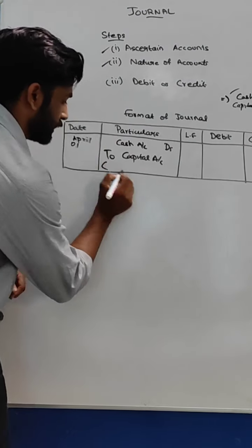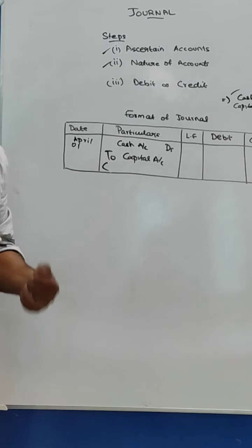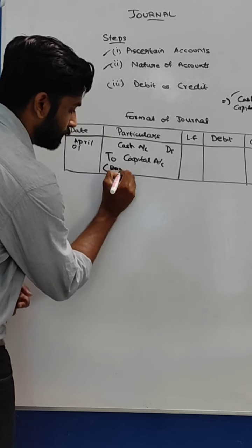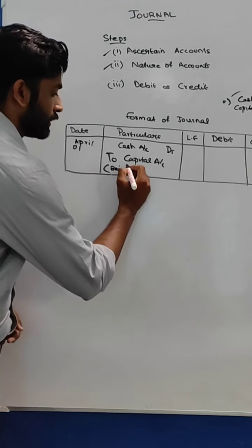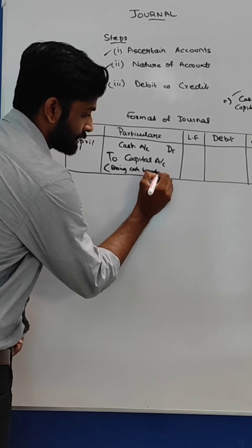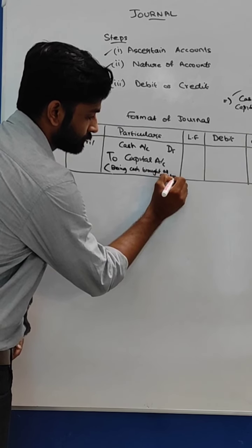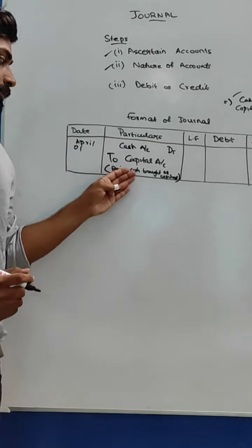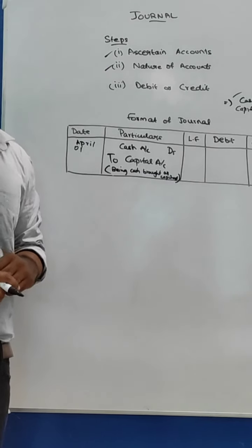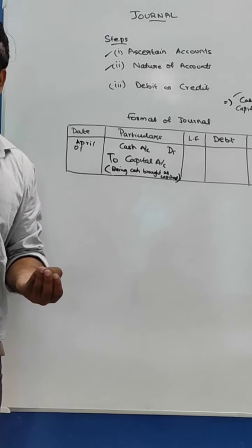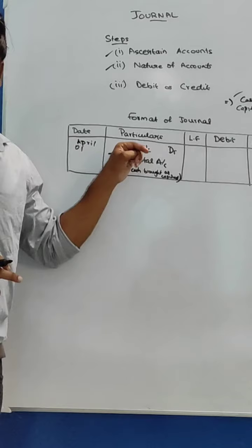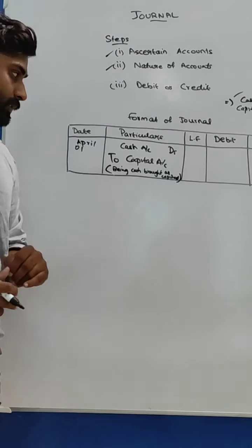After the accounts, we write the narration, which explains what the transaction is. We begin the narration with the word 'Being.' For this transaction, the narration is: 'Being cash brought as capital,' or alternatively, 'Being started business with cash.' Either form is acceptable. So the complete entry is: Cash Account debit, To Capital Account, with the narration below.